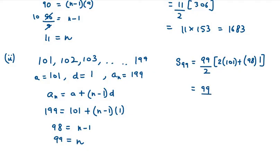So 99 over 2, in bracket you will get 202 plus 98, that is 300. So you can cancel this out and you will get 150. So 99 into 150 equals 14,850.